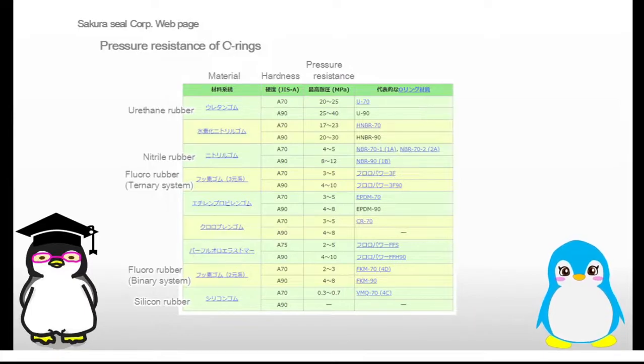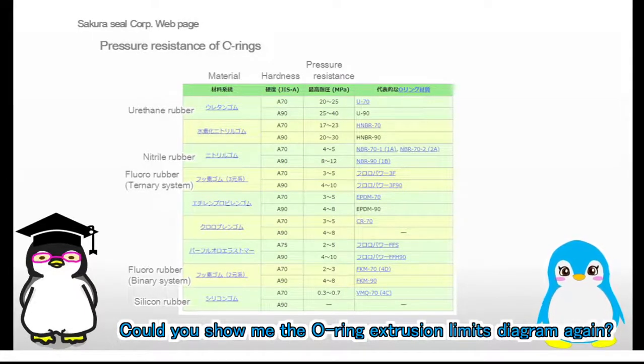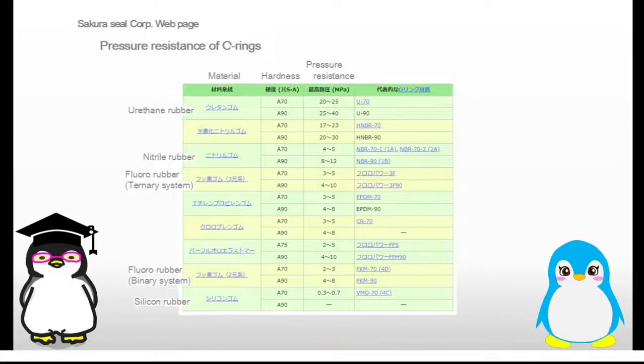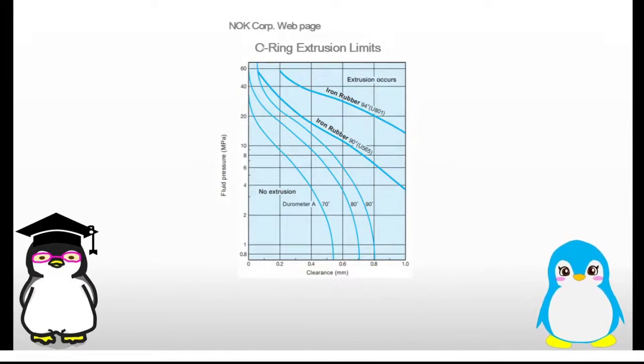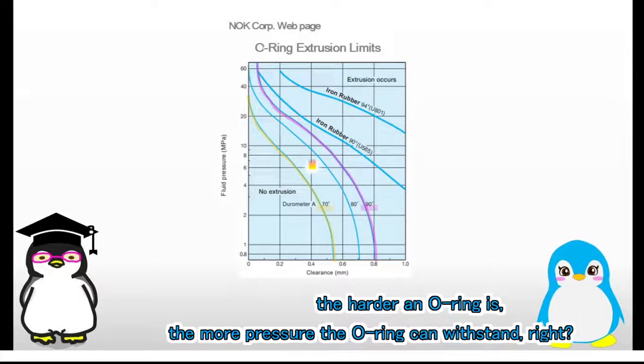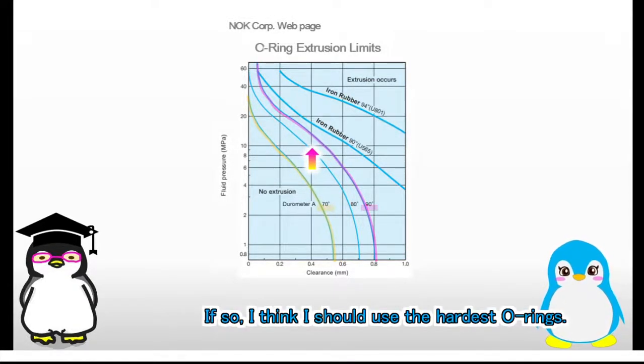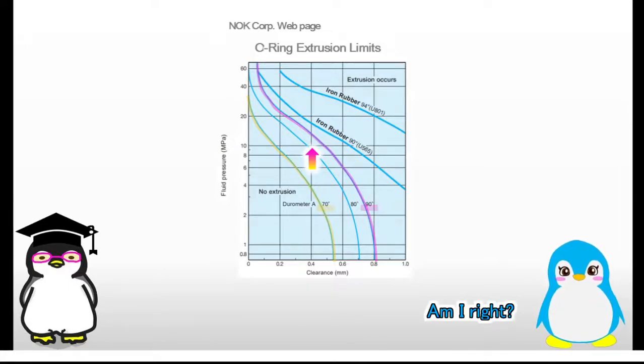Thank you. Actually I have a question. Could you show me the O-ring extrusion limits diagram again? According to this diagram, the harder an O-ring is, the more pressure the O-ring can withstand, right? If so, I think I should use the hardest O-rings. Am I right?